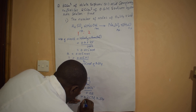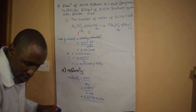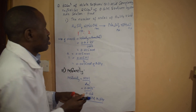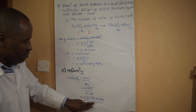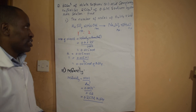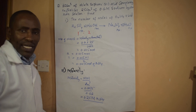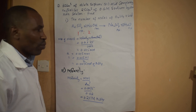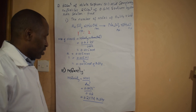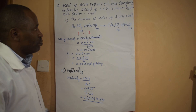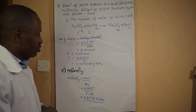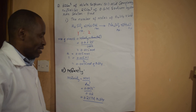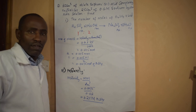So 0.25 molarity sulfuric acid — that is what we are talking about. Basically, that is stoichiometry and that is how we go about it. Let's do more practice on this so that we are ready for our titration. Thank you very much.